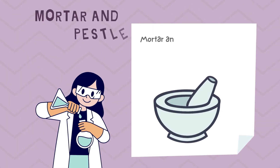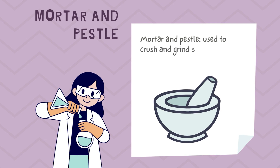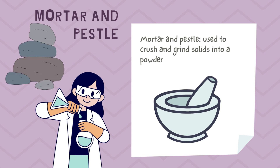Mortar and pestle. A mortar and pestle are used to crush and grind solids into a powder. The mortar is a bowl and the pestle is a small club-shaped tool. They are typically made from ceramic or stone.